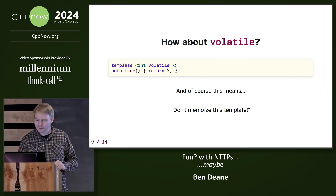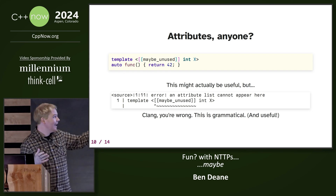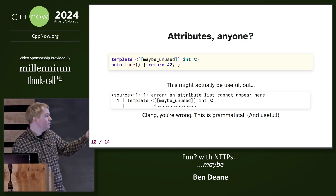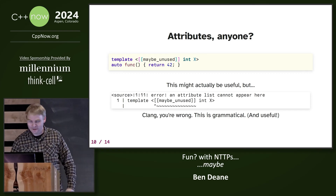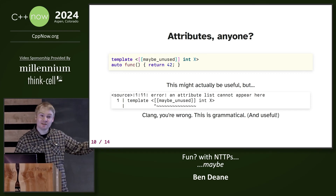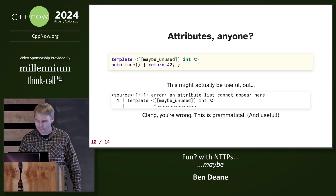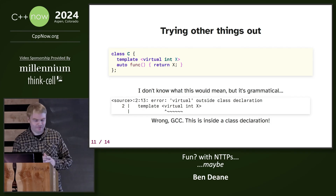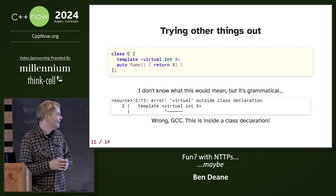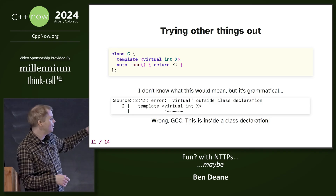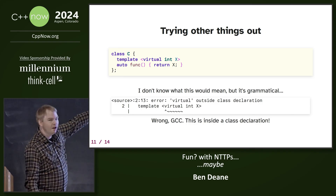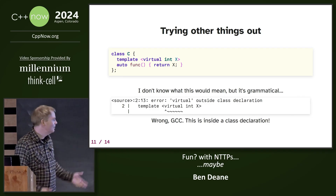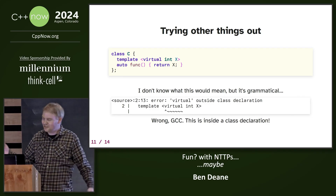I went a bit further — something that might actually be useful: attributes. This might actually be useful, right? Clang is wrong. An attribute list can appear there; it's perfectly grammatical. GCC doesn't mind this, but Clang says no. Next, I tried something that GCC didn't like: virtual. I really don't know what it would mean. But GCC even says something wrong — it totally is inside a class declaration.